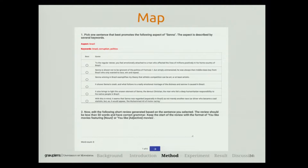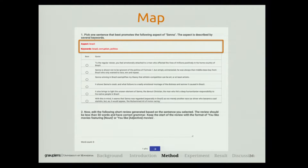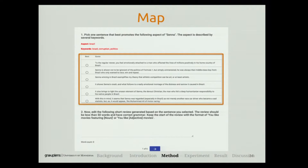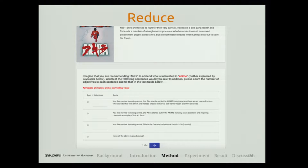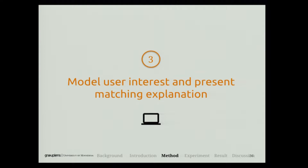In this crowd processing step, we take a map-and-reduce workflow. In the mapper phase, we ask three independent workers to do this task. They are shown the topic aspect about the movie and six quotes that might describe this aspect. Their task is to pick the one that best describes the topical aspect, then rewrite it in a way suitable to show users. At the reducer step, we ask another three crowd workers to vote on the three explanations written by the mapper workers, and we take the best one as the final output.